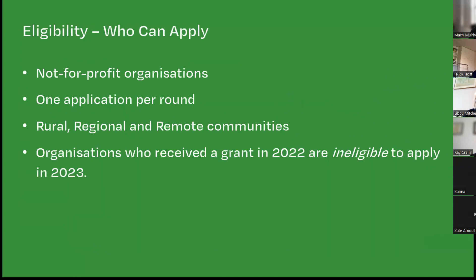With regards to eligibility, the program is open to all not-for-profit organisations and does not require deductible gift recipient status — you just have to be a not-for-profit. If you have any challenges with your ABN or incorporation certificate, speak to FRRR. You can only apply once per round for a project, and only rural, regional and remote communities are eligible. Organisations successful in the previous round are not able to apply in this round, to spread the opportunity around.